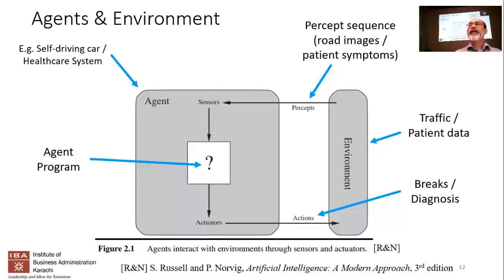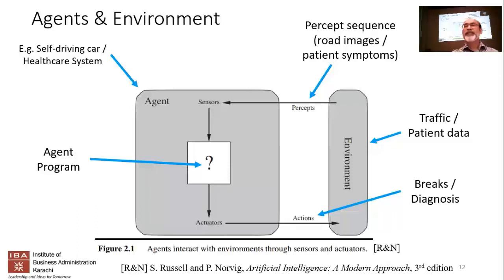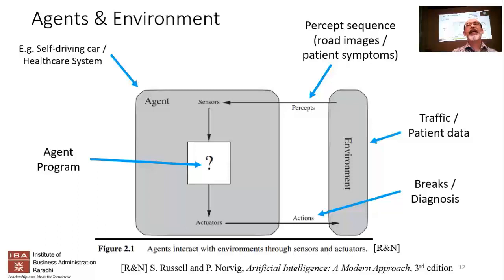Let's take a closer look at the different components of an agent and an environment, looking at two examples. The first is a self-driving car — a physical example with a car going on the road. The other is a healthcare system — maybe a completely software-based AI, like IBM Watson for healthcare. An agent could be either hardware or software. The environment for the self-driving car could be traffic, road conditions, people crossing the road. For the healthcare system, it could be patient data, patient history, and so on.